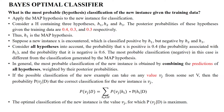What is the most probable hypothesis for a new example — new data given the training data — using the Bayes Optimal Classifier? The Bayes Optimal Classifier is based upon the maximal a posteriori hypothesis applied to new data which is sent to the model for classification.